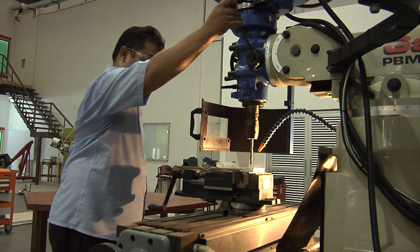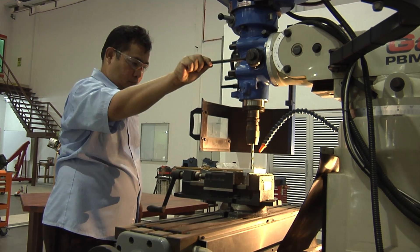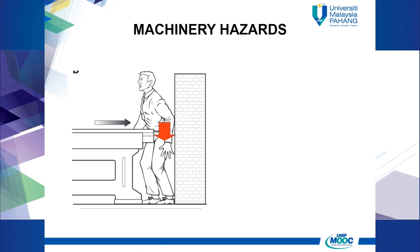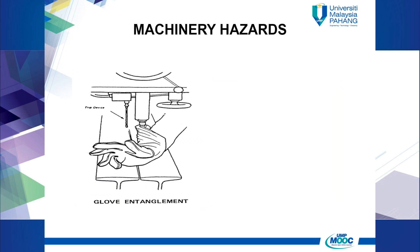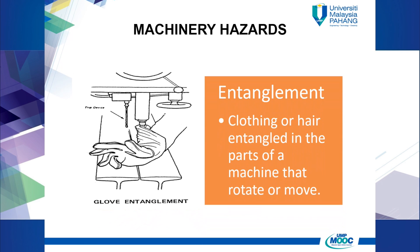Stabbing and puncturing hazards are hazards that can occur when the tips of machine parts, work materials, and objects fly into and pierce the body. Impact hazard occurs when an object or part of a machine acts on the body but does not puncture or pierce it. An example is when a worker is hit by a moving part of a machine.